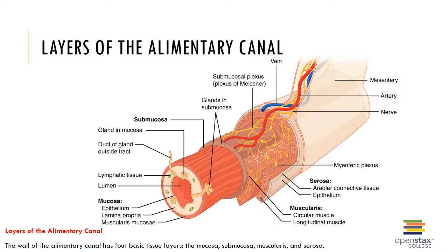The lamina propria is a basement membrane composed of areolar connective tissue and contains blood vessels, sensory nerve endings, lymphatic vessels, scattered areas of lymphoid tissue called Peyer's patches and MALT, and mucus glands. The muscularis mucosa is two concentric layers of smooth muscle — the inner circular layer encircles the lumen, and the outer longitudinal layer runs parallel to the long axis of the GI tract. Contractions of the muscularis mucosa create folds that project from the internal surface of the GI tract, such as rugae, plicae circularis, and villi.